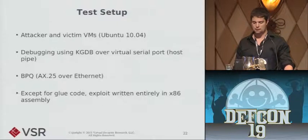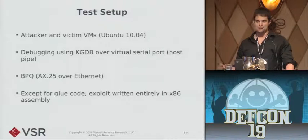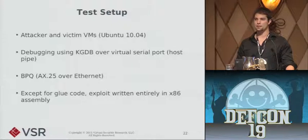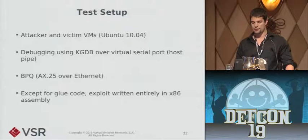For actual testing I just had two VMs. I chose Ubuntu 10.04 — the attacker is just a desktop machine, the victim is Ubuntu Server because that's a PAE build. For debugging I just use KGDB. For the actual networking, I was using BPQ, which is an implementation of AX25 amateur radio over Ethernet, so my VMs can talk to each other without me needing to buy radio hardware or get a license. The exploit is written entirely in x86 assembly, except for the code that ties it all together and sends it over the wire.